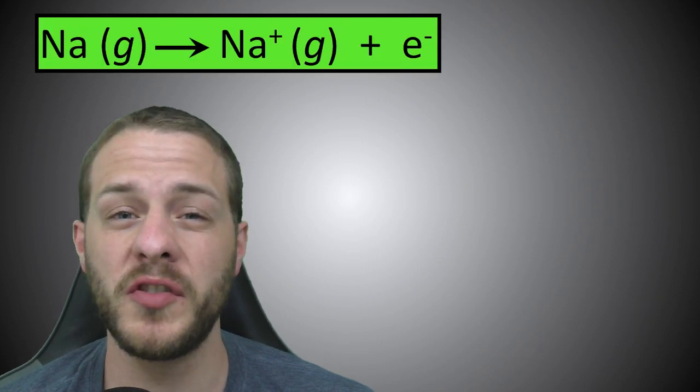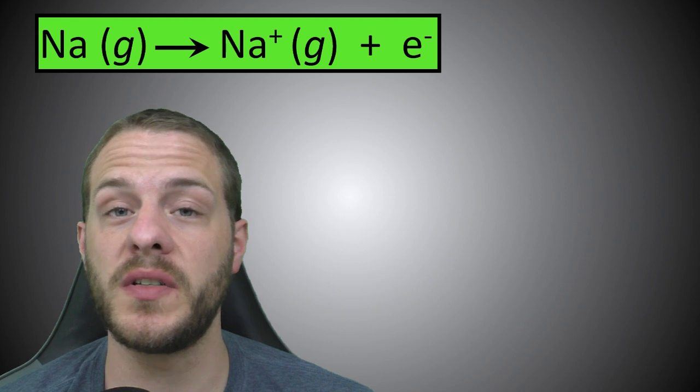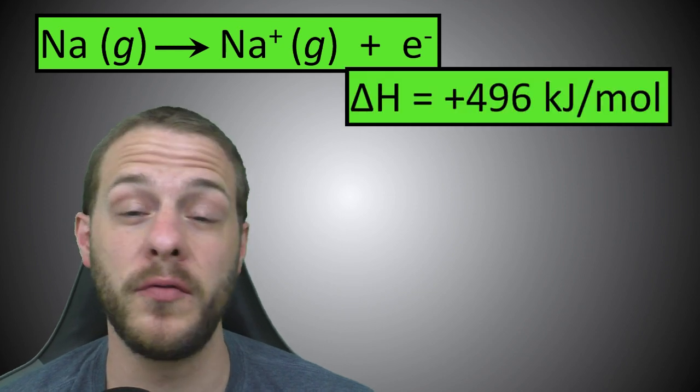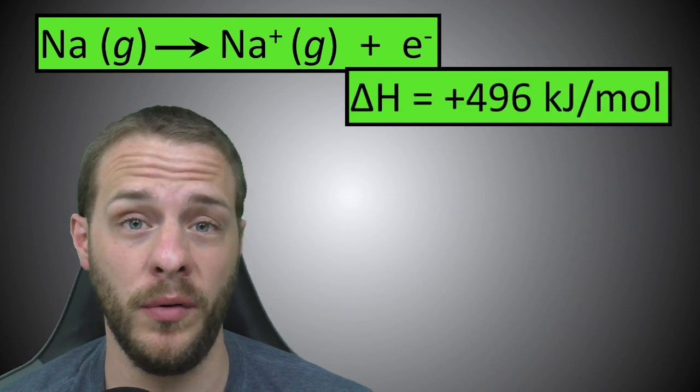Why do you think the formation of sodium chloride is so exothermic? Where do you suppose this energy comes from? Well, it doesn't come exclusively from the tendencies of metals to lose electrons and non-metals to gain electrons. The removal of an electron from a mole of sodium atoms is actually endothermic — sodium's first ionization energy is positive 496 kilojoules per mole.